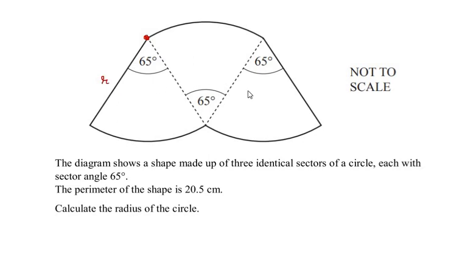As given, all three sectors are identical, so this bold line also represents the radius of the circle. Now let us look at these arc lengths. Since all three sectors are identical, we can consider this arc length as l, the same represents this arc length and this as well.